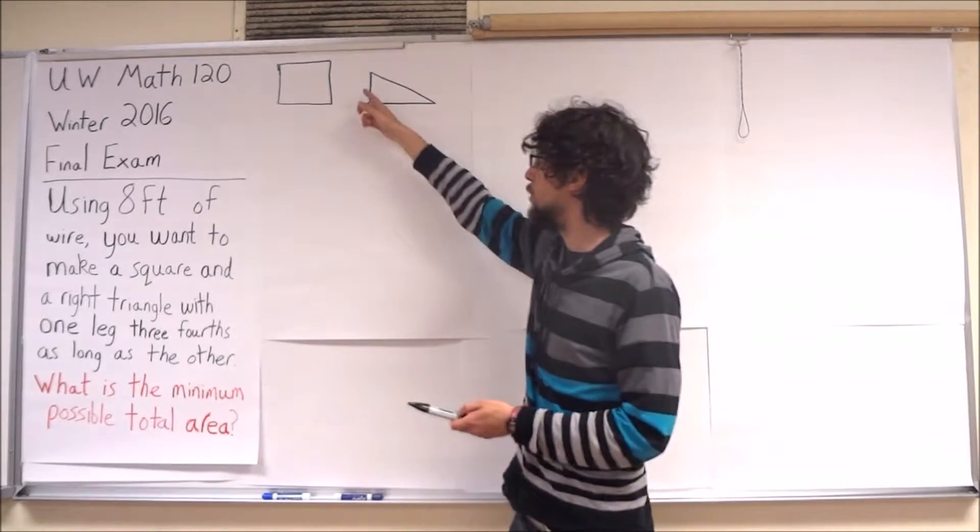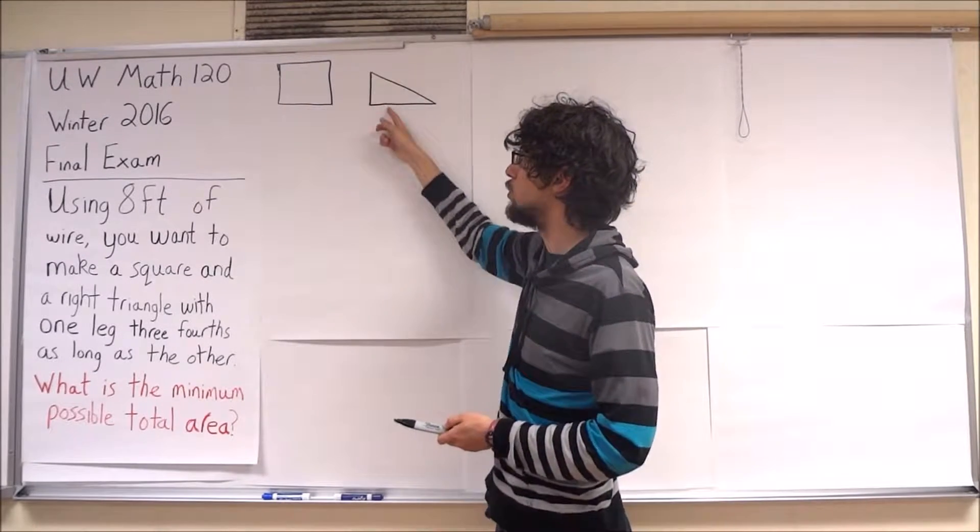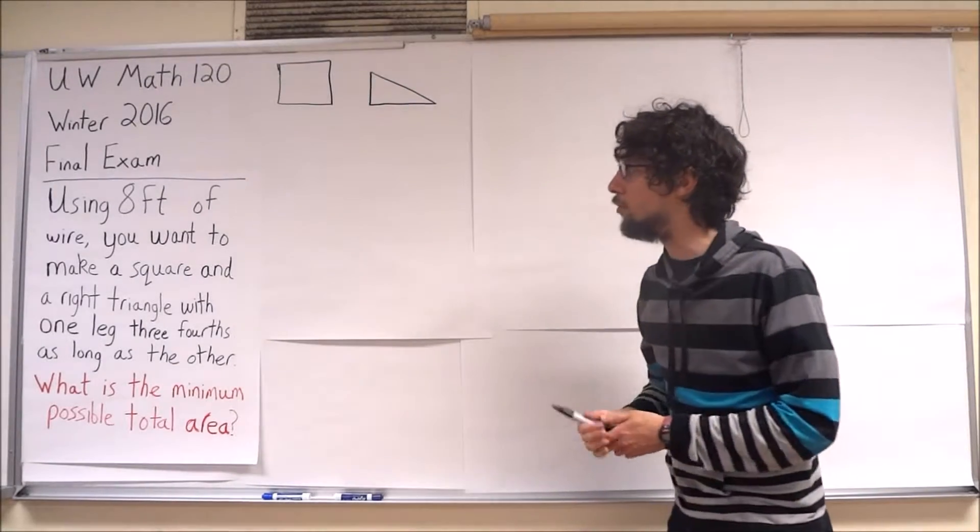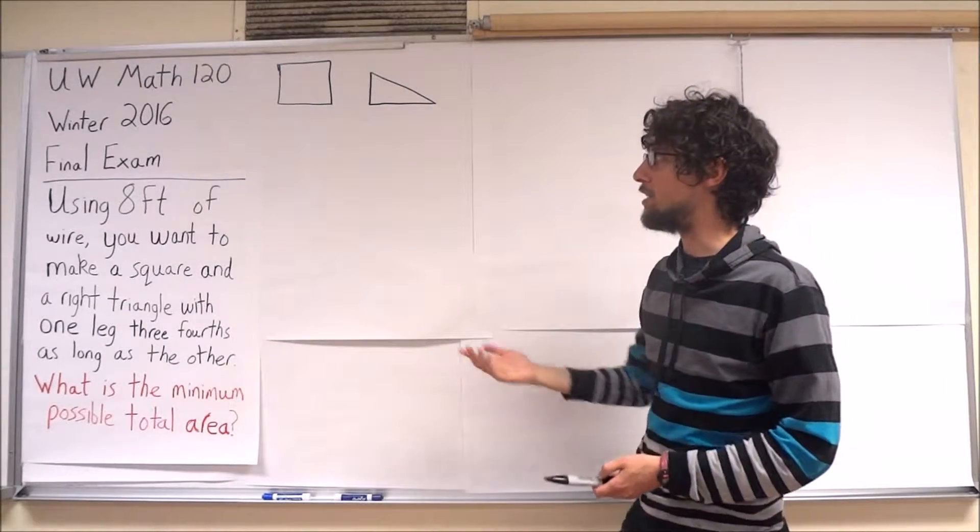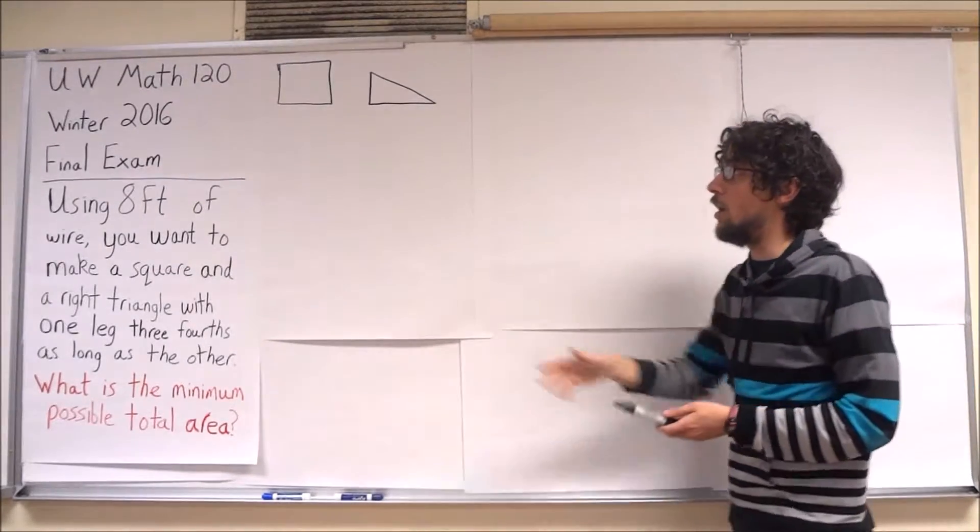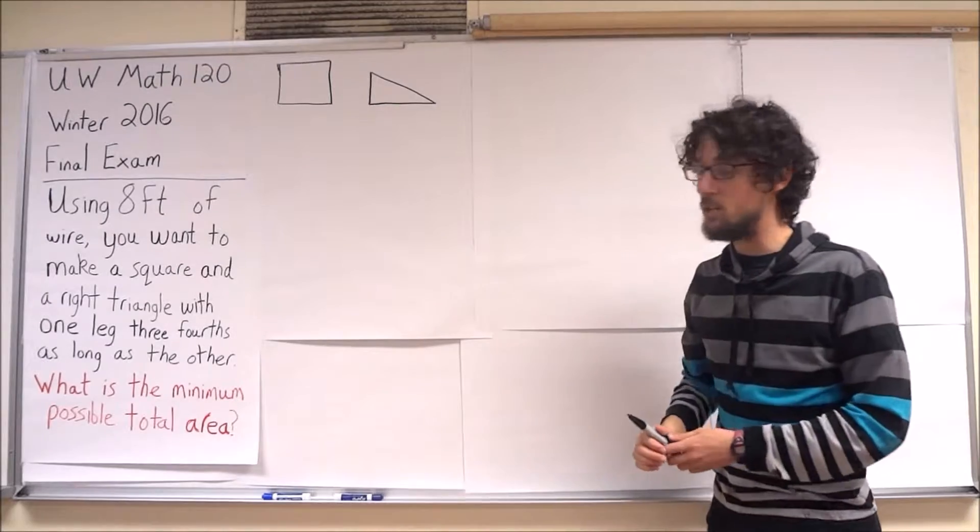Then I will have used 6, 8, and 10. I will have used 24 inches of wire for the triangle. The remainder of my wire, the remaining 6 feet, will be for my square. And I can compute the area of my square and triangle just based on that one choice of this length.